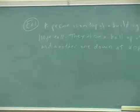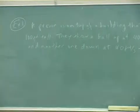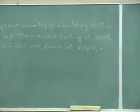So a person is on top of a building that is 100 feet tall, they throw a ball up at 40 feet per second, and another one down at 40 feet per second.